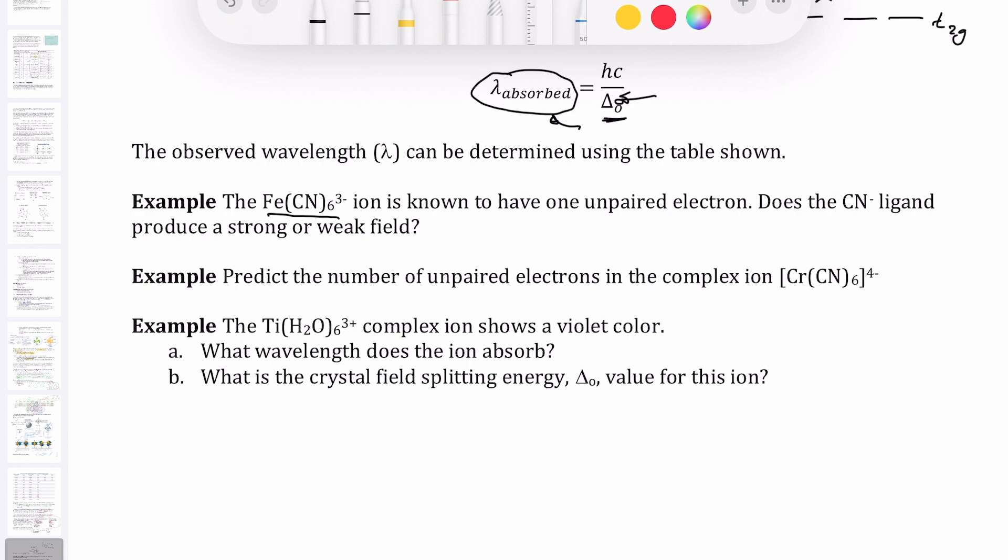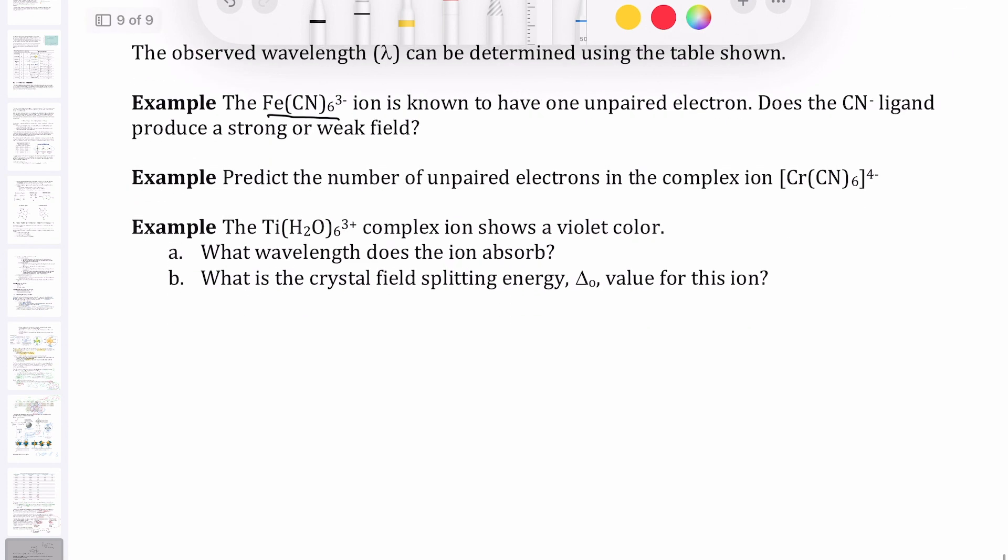The way you want to do this is you want to think about the two different possible configuration of the electrons. In order for you to do that, you need to know how many electrons are present in this particular transition metal ion.